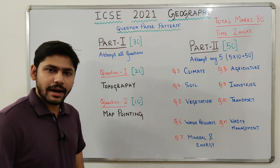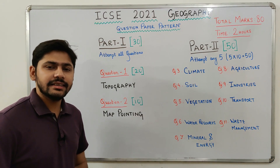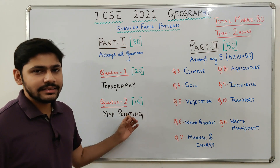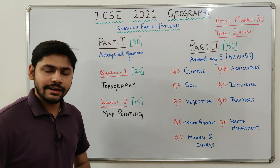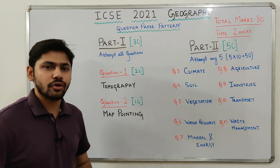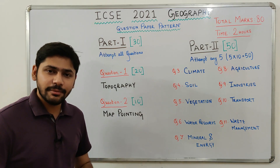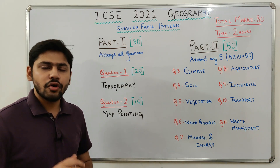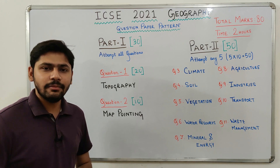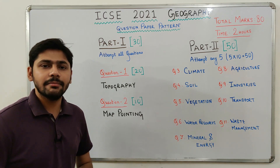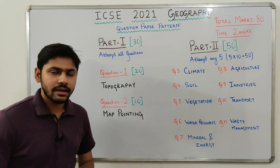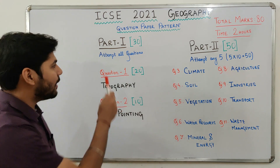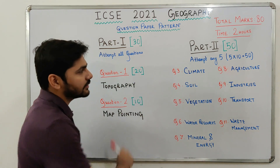Moving on to the question paper pattern of the ICSE 2021 geography board exam. This is an 80-mark question paper and you will get two hours to solve it. You will also get an additional 15 minutes to read the question paper before you start writing. So: full marks 80, writing time 2 hours, question paper reading time 15 minutes. The question paper is divided into two parts: Part 1 is 30 marks and Part 2 is 50 marks.